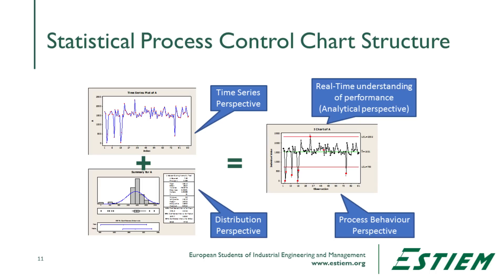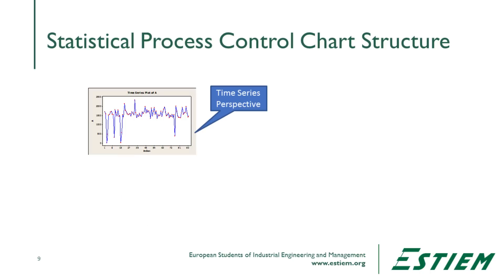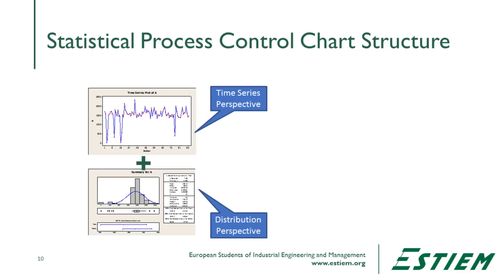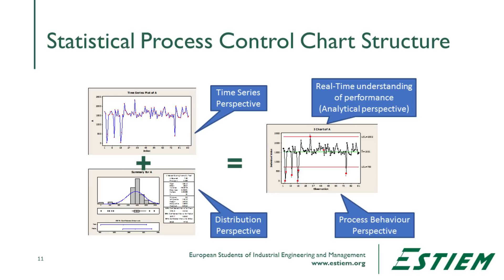To do this, we use a particular process tool called the statistical process control chart. The typical instance we will use is called the individuals chart. As you can see from the graphic, the individuals chart blends two perspectives: it takes the time series data — real-time data showing process performance behavior — and also the distribution perspective, a summarized enumerative view. We overlay the time series data on top of the distribution data, giving us a process behavior perspective.